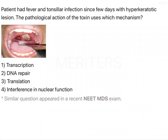A patient had fever and tonsillar infection since a few days with a hyperkeratotic lesion. The pathological detection of the toxin uses which mechanism? Looking at the clinical features — fever, tonsillar infection, along with a hyperkeratotic lesion — this particular membrane and the whole clinical picture point towards a diagnosis of diphtheria.